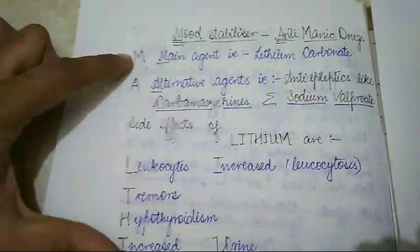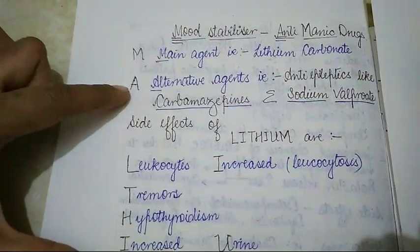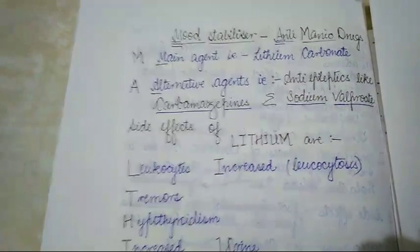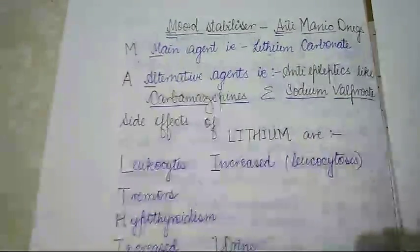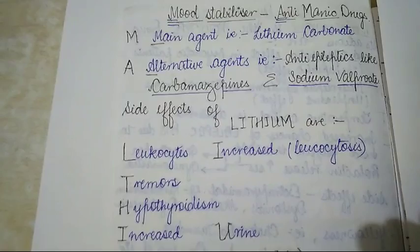The M stands for the main agent, which is lithium carbonate. A is for alternative agents. Alternative agents that can be used are anti-epileptic drugs like carbamazepines and sodium valproate.